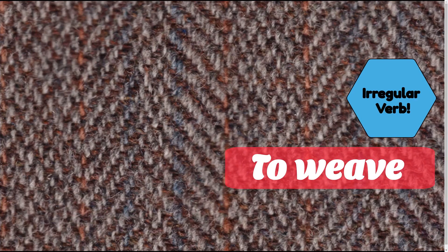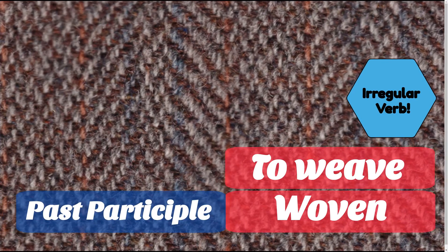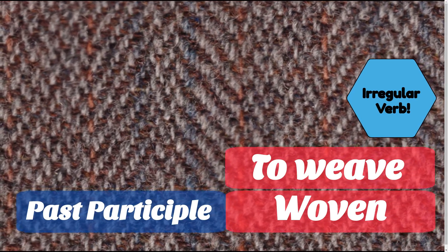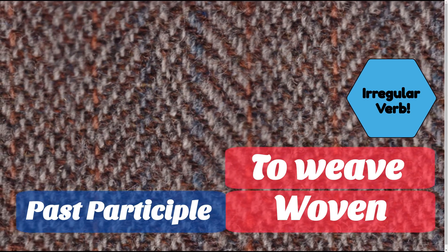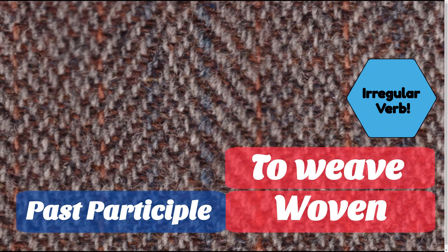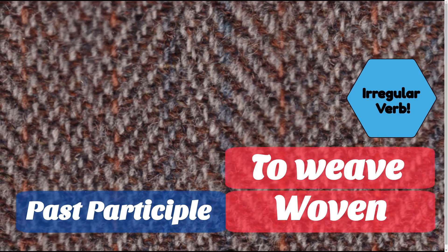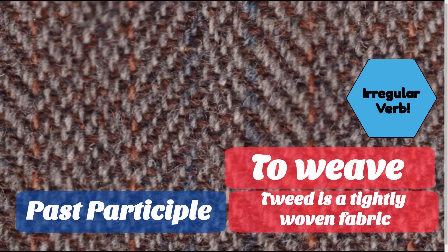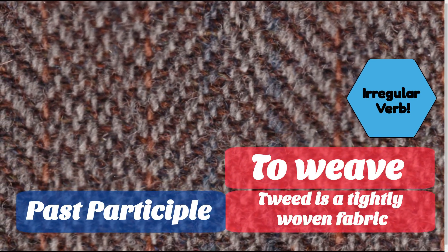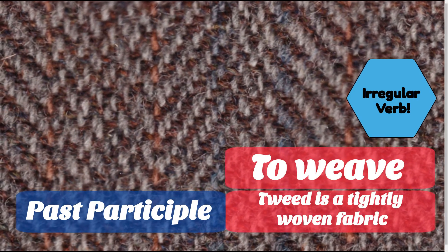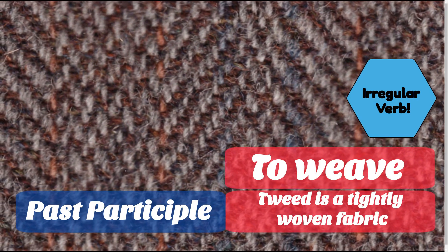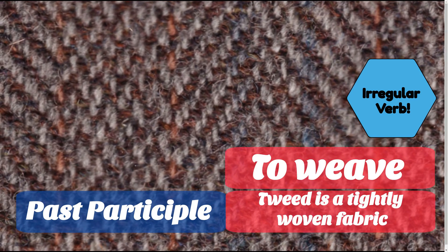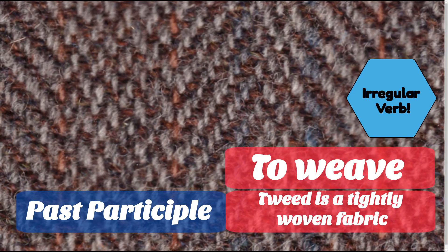In the past participle, we use woven. An example of the past participle is: 'Tweed is a tightly woven fabric.'